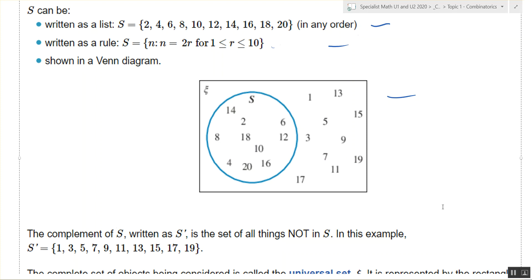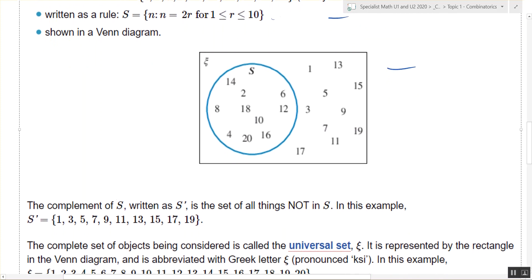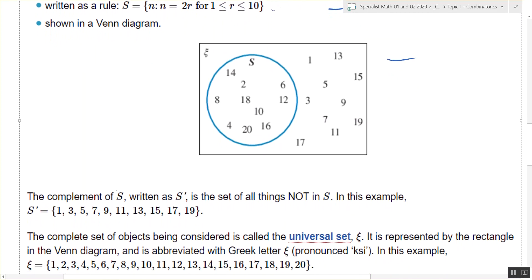So in this example, in the universal set, all of those numbers 1, 3, 5, 7, etc. are the complement numbers. There you go. That's what the funny E is. It's a Greek letter pronounced xi.